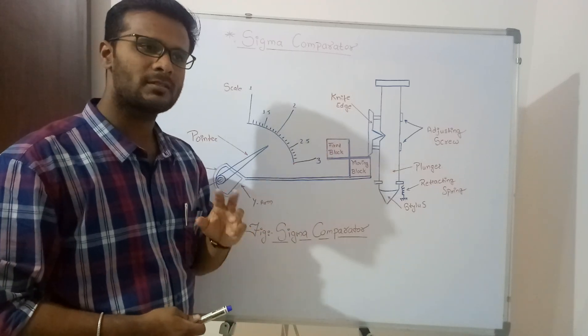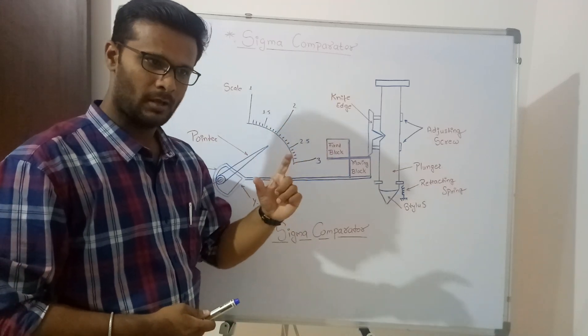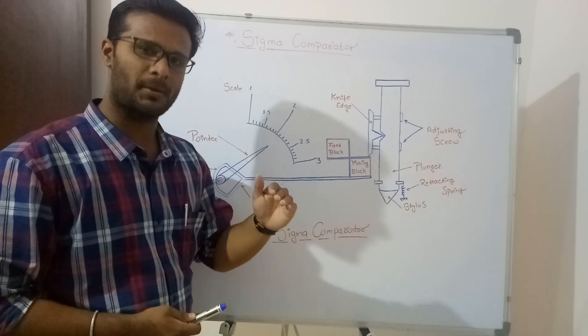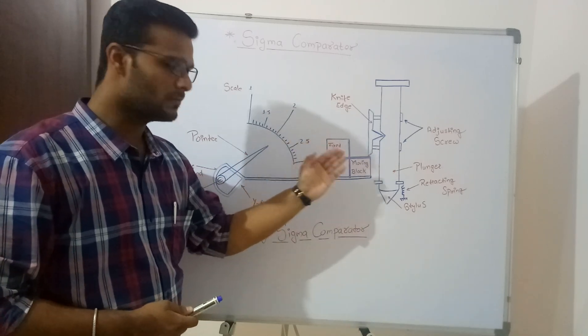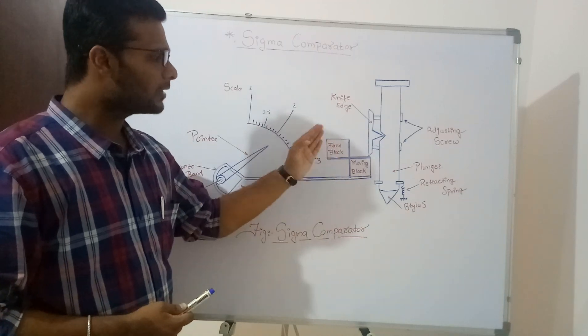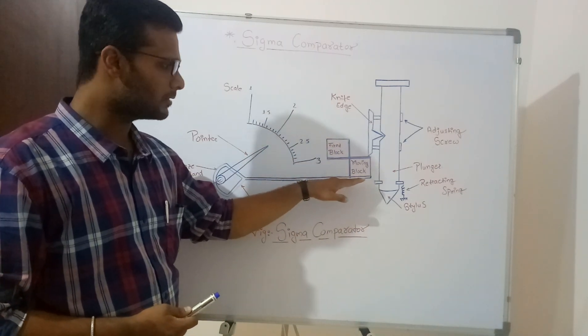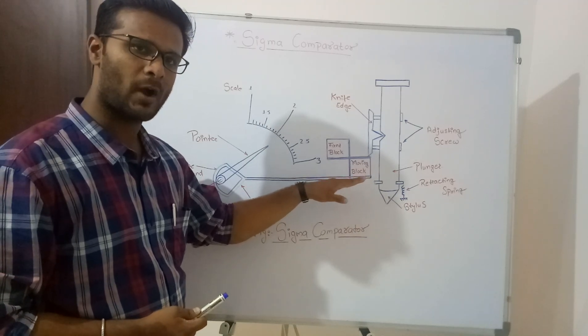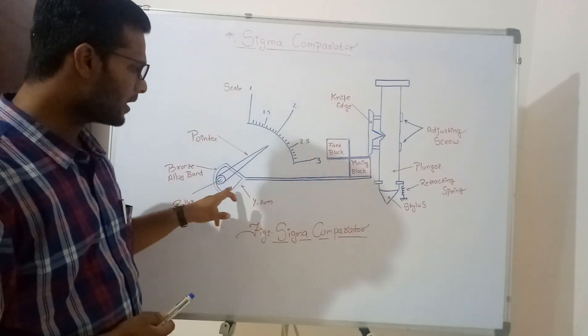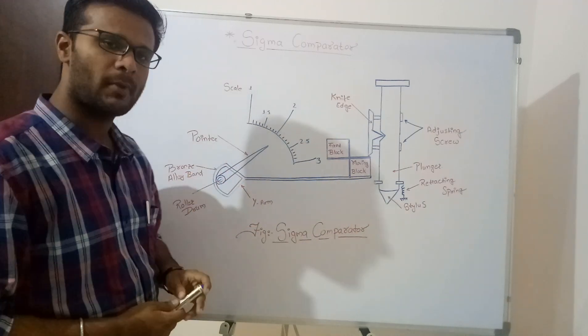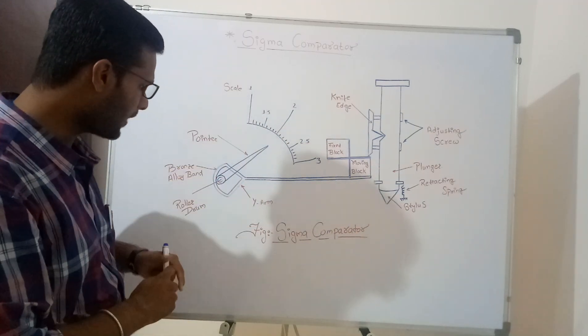The distance of the knife edge can be adjusted so as to compensate the Sigma block. What exactly is Sigma block? Sigma block is nothing but two blocks, rectangular blocks which are fixed or which are connected with help of strips. One is fixed and one is moving. To that moving block Sigma block we are having attached, or that Sigma block is resting on Y arm. This is the Y arm. The Y arm is having bronze alloy band. This is the bronze alloy band up to here.